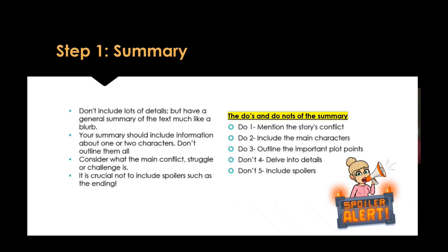Your summary should include information about maybe one or two of the characters — you don't need to outline them all. You do want to give the person reading your review a chance to discover things for themselves. One thing you might want to mention is the main conflict: what struggle will the characters go through, or perhaps what the main challenge is? This may entice the person to either read the book or reject it based on their personal interests.